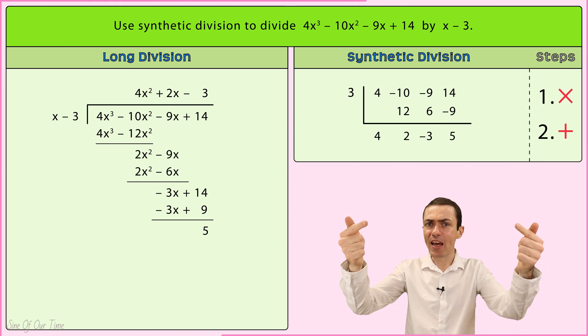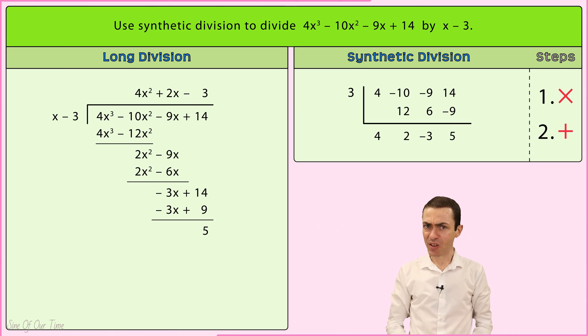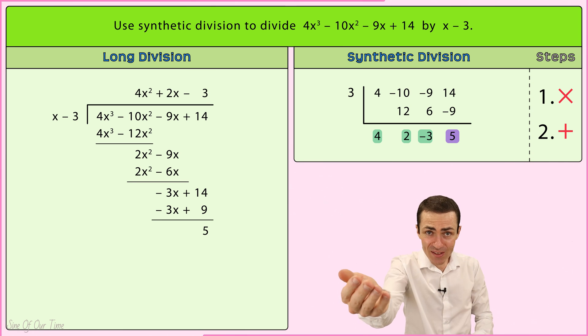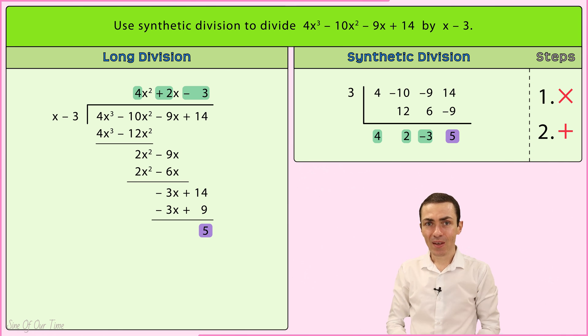What exactly do the numbers at the bottom of the synthetic division tell us? Well, they tell us the results of the division. That is, the quotient as well as the remainder. The first three numbers represent the coefficients of the quotient, while the last number represents the remainder.